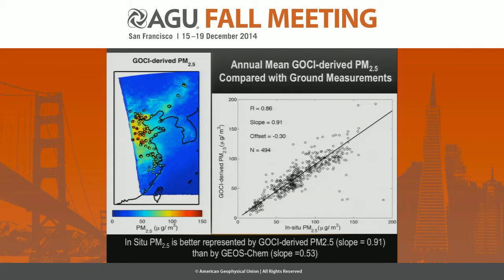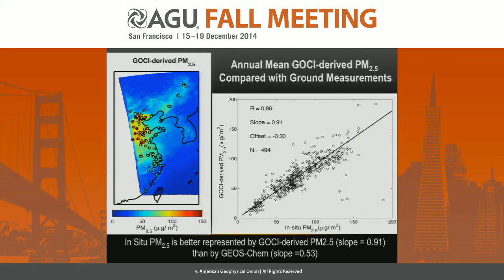Here's a map showing the annual mean GOSI-derived PM2.5 over the entire eastern China for 2013 as the background color. The circles represent ground monitors, and the fill colors represent the annual mean of ground measurements. Both GOSI and ground measurements indicate the highest PM2.5 concentration over this region in eastern China. In a monitor-by-monitor validation, the correlation coefficient between GOSI-estimated PM2.5 and in-situ PM2.5 is 0.86 with a slope close to unity, indicating significant correlation with ground measurements. GOSI also outperforms the GEOS-Chem model on its own.